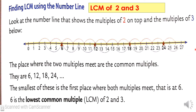The places where the two sets of multiples meet are the common multiples. Here, the multiples of 2 and 3 meet at 6, 12, 18, and 24 — these are the common multiples. The smallest of these, which is the first place where both multiples meet, is 6. Therefore, 6 is the Lowest Common Multiple or LCM of 2 and 3.